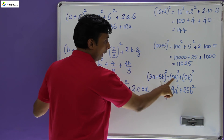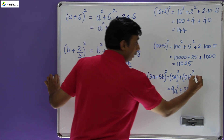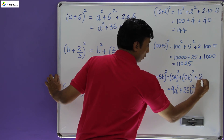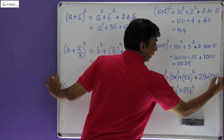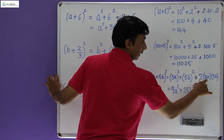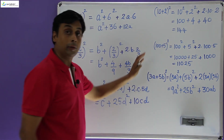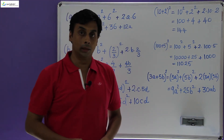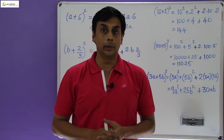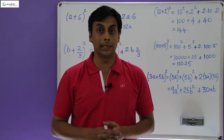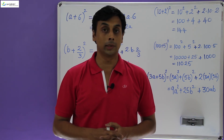Similarly, (3a + 5b)² was written as 9a² + 25b². I need to add the 2ab term: 2 × 3 × 5 = 30, so the missing term is + 30ab. I hope we understood the mistakes we were making and have rectified them. (a + b)² = a² + b² + 2ab — you should never repeat this mistake again.